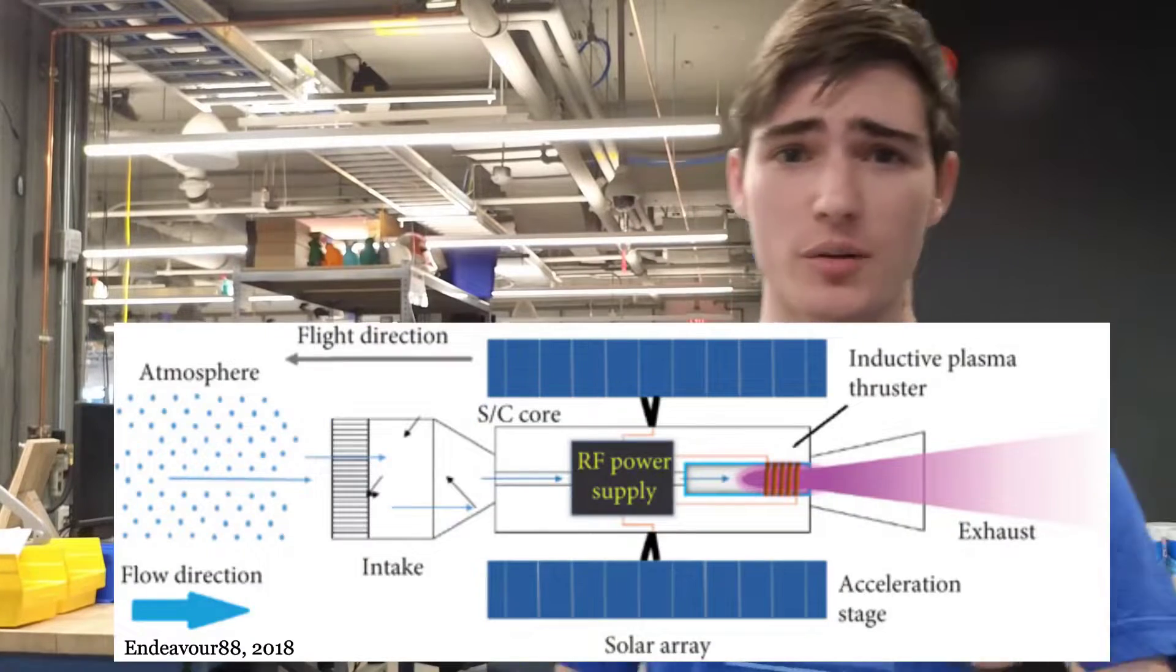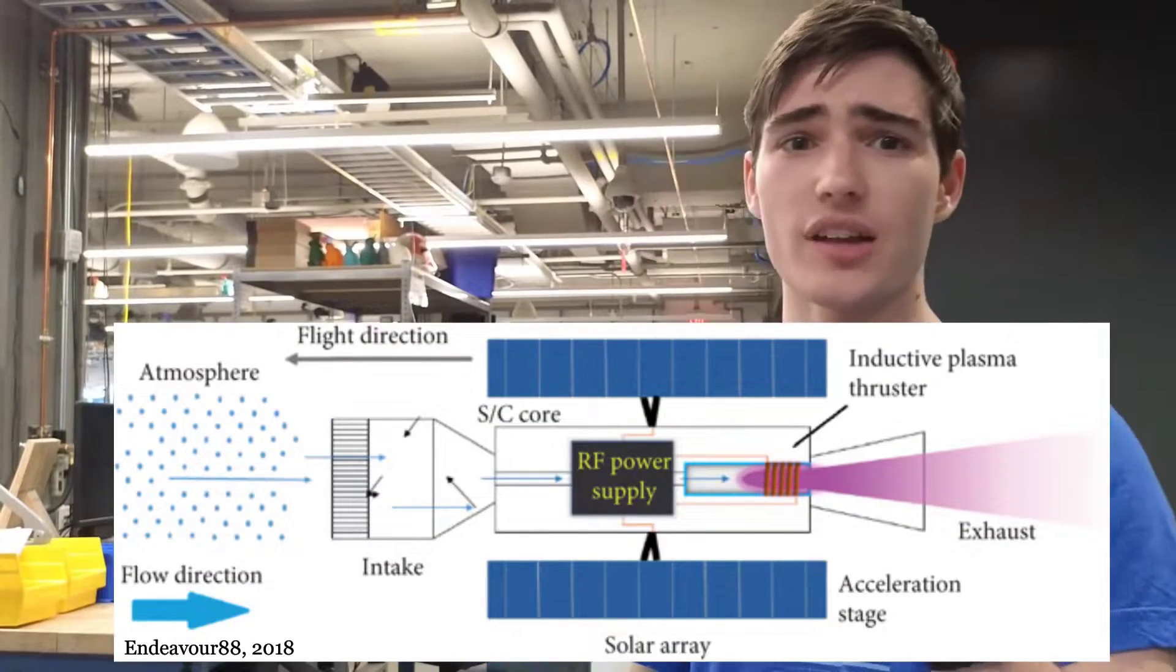But why should you care about it if you aren't planning to go to space any time soon? Enter the atmosphere-breathing electric propulsion ion thruster, which intakes and accelerates ionized atmospheric gases to produce thrust. It's perfect for very low Earth orbit and aircraft since ion thrusters don't have any moving parts.